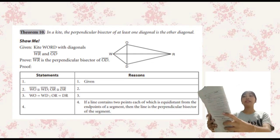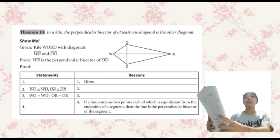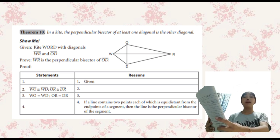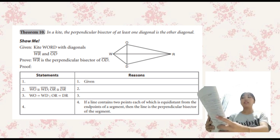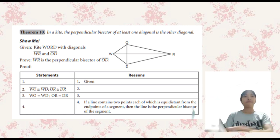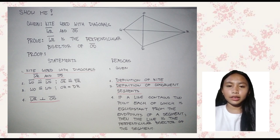Theorem 10: In a kite, the perpendicular bisector of one diagonal is the other diagonal. Given: Kite WORD with diagonal segment WR and segment OD. Proof: Segment WR is the perpendicular bisector of segment OD.